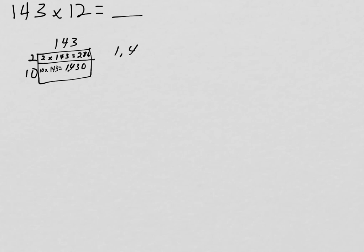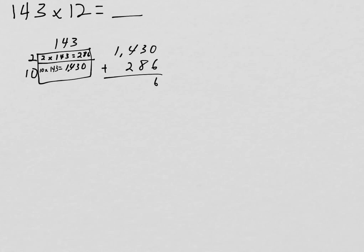Now I have two partial products that I'm going to add. You'll notice I switched the order — you want to do this in whatever order makes sense to you. I often like to put larger numbers on top when I'm adding. Like multiplication, addition has the commutative property, so we could solve it in whatever order makes the most sense to us. 1430 plus 286 equals 1716. You might want to check me at home quick.